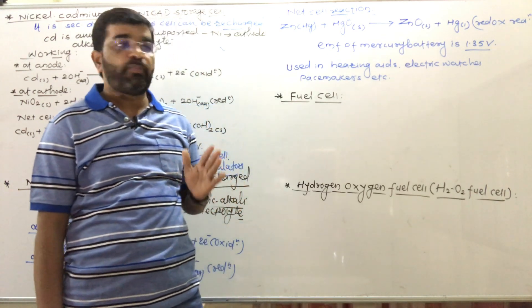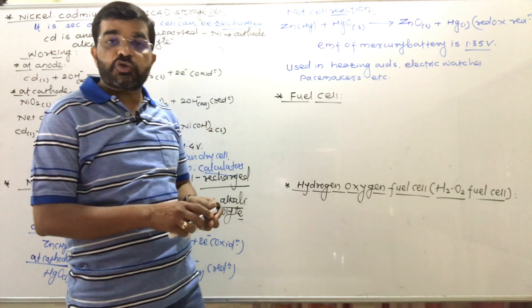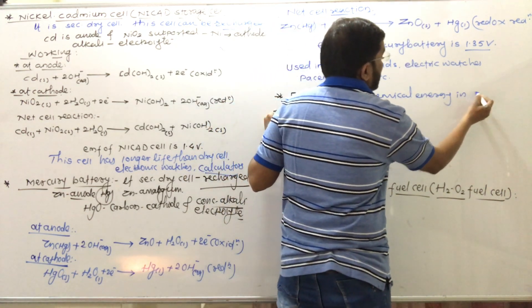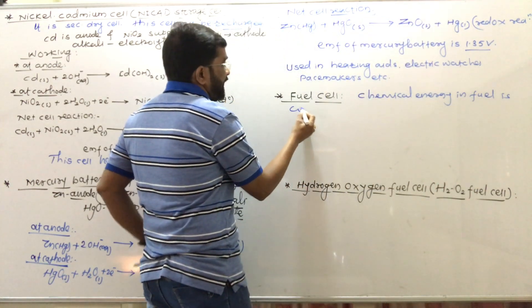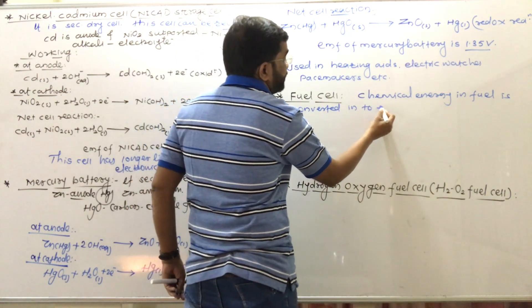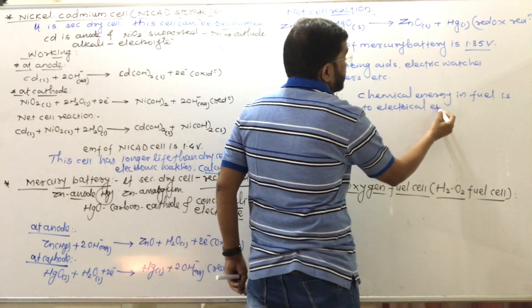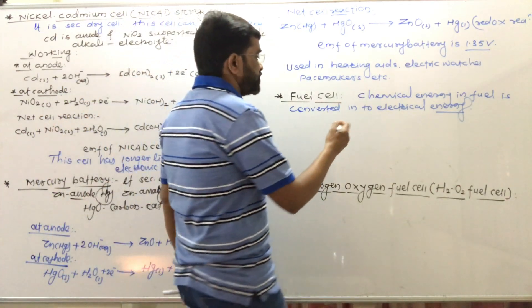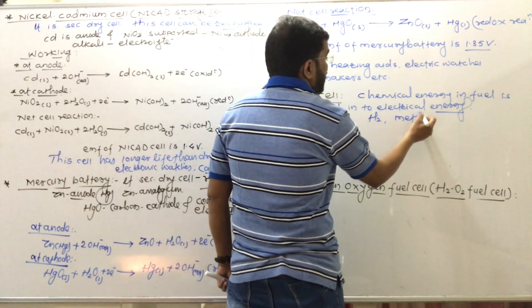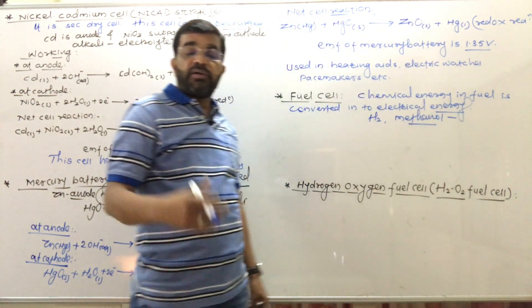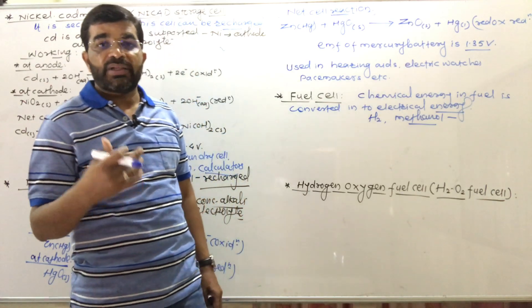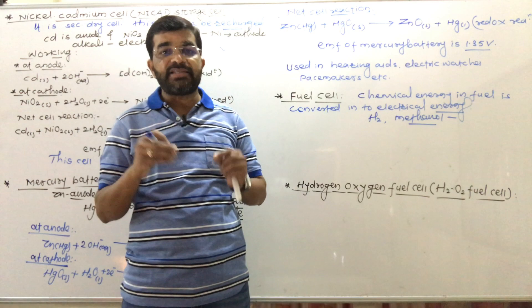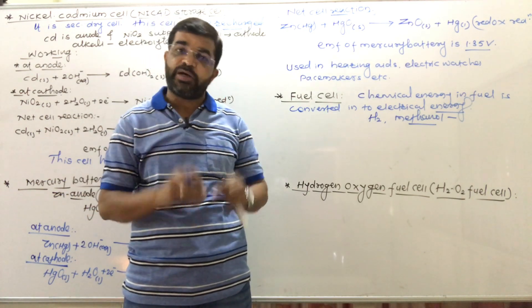Now we study another important type of cell — the fuel cell. In a fuel cell, chemical energy stored in fuel is directly converted into electrical energy. Fuels used in this cell include hydrogen (H₂), methanol, and liquid hydrocarbons like petrol and diesel. Just as we use generators with diesel or petrol to generate electricity, the fuel cell achieves a similar conversion but directly through electrochemical reaction.